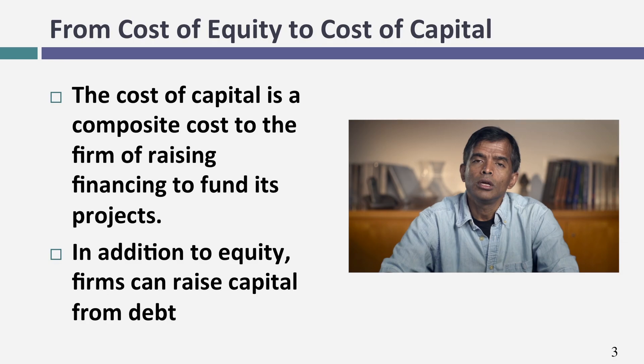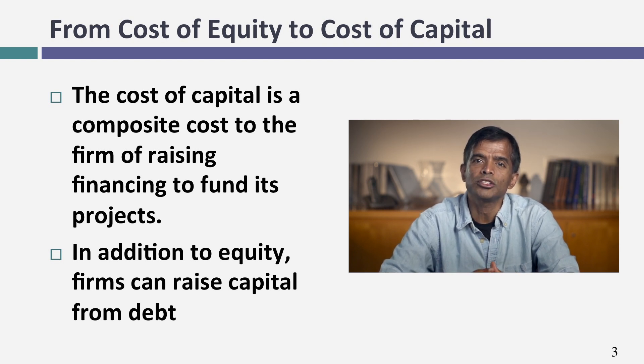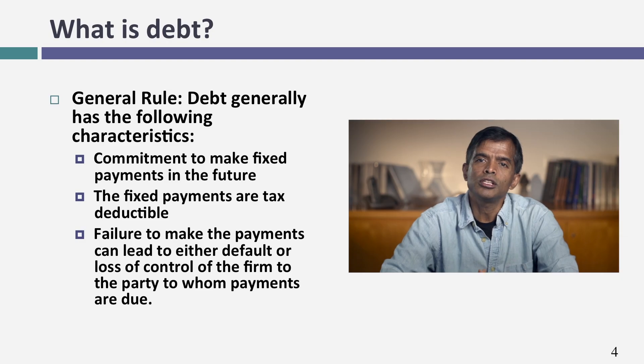To get from cost of equity to cost of capital, we need to bring in how much money you borrow, so we have to define debt and attach a cost to that debt. The first question is: what is debt? That sounds like a pretty simple question — you should be able to look at a balance sheet and make that judgment. Unfortunately, it's not that simple. There are three criteria I go looking for to classify something as debt. The first is you have to have a contractual commitment to make payments. That's what separates debt from equity.